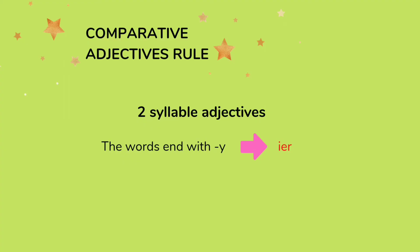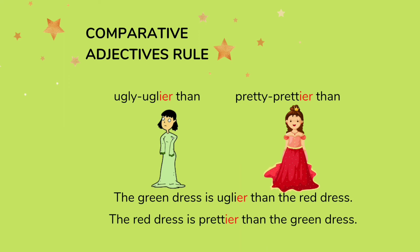If a two-syllable adjective ends with Y, change the Y to I and add -er for the comparative form. Ugly becomes uglier than — the green dress is uglier than the red dress. Pretty becomes prettier than — the red dress is prettier than the green dress.